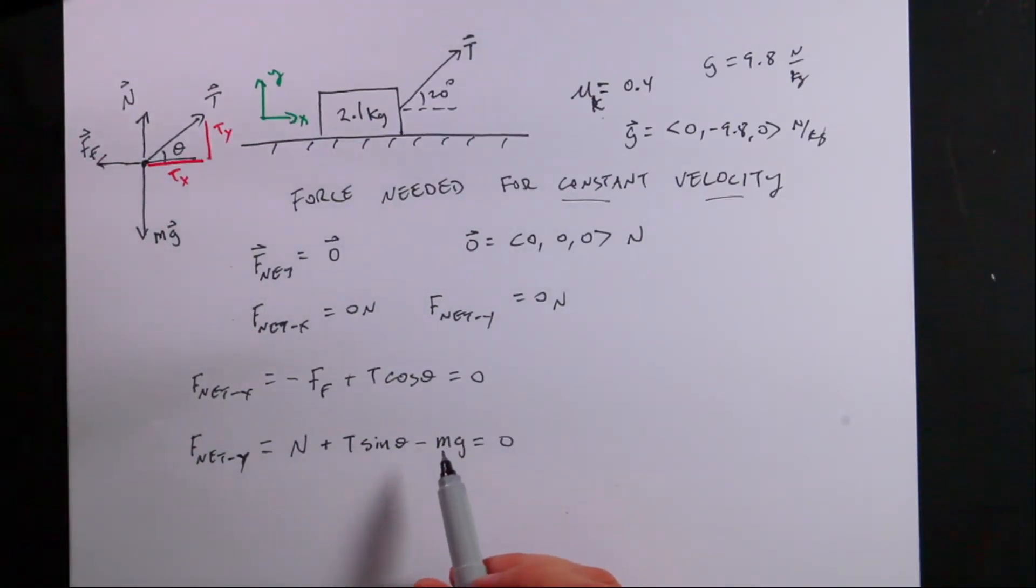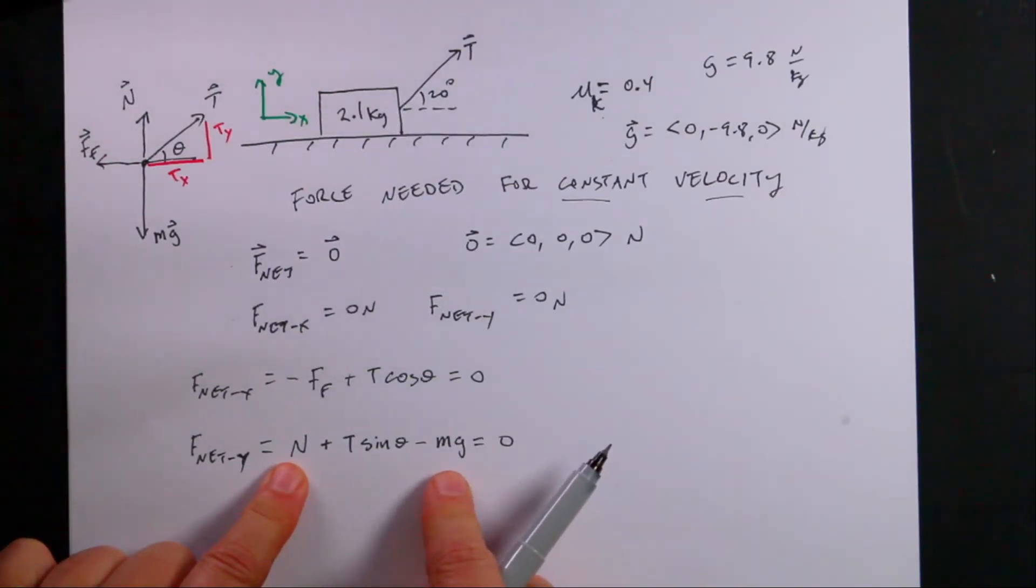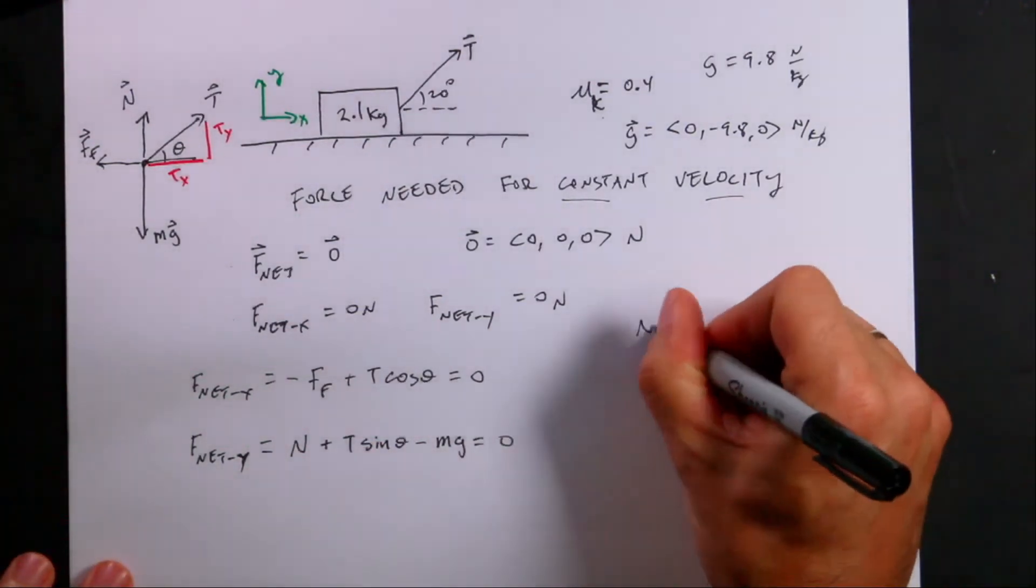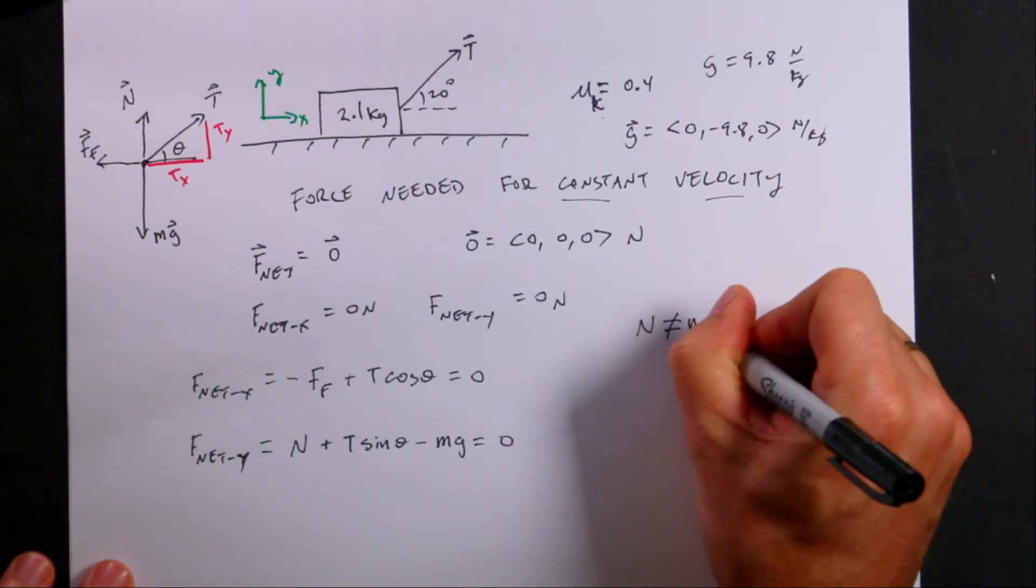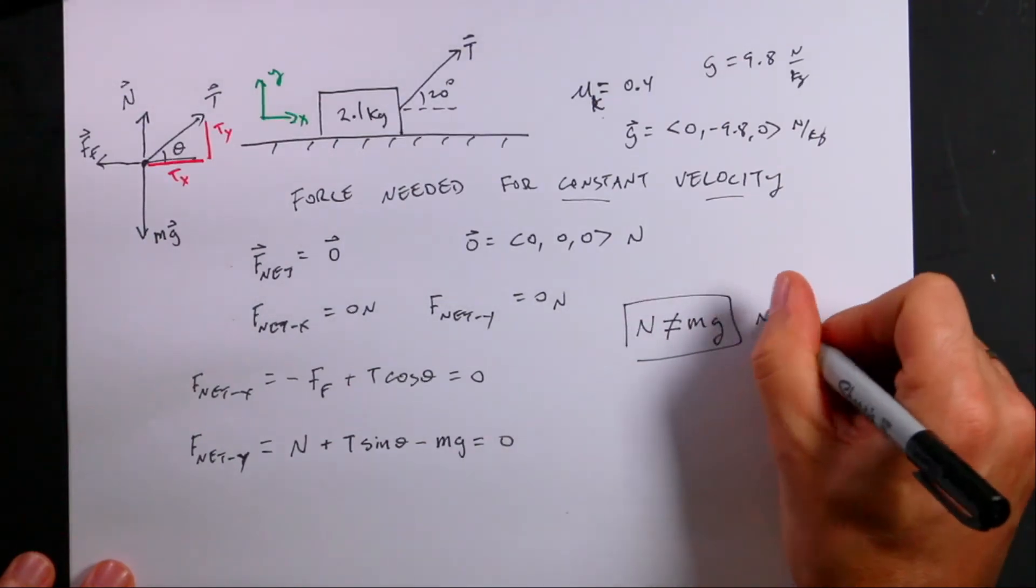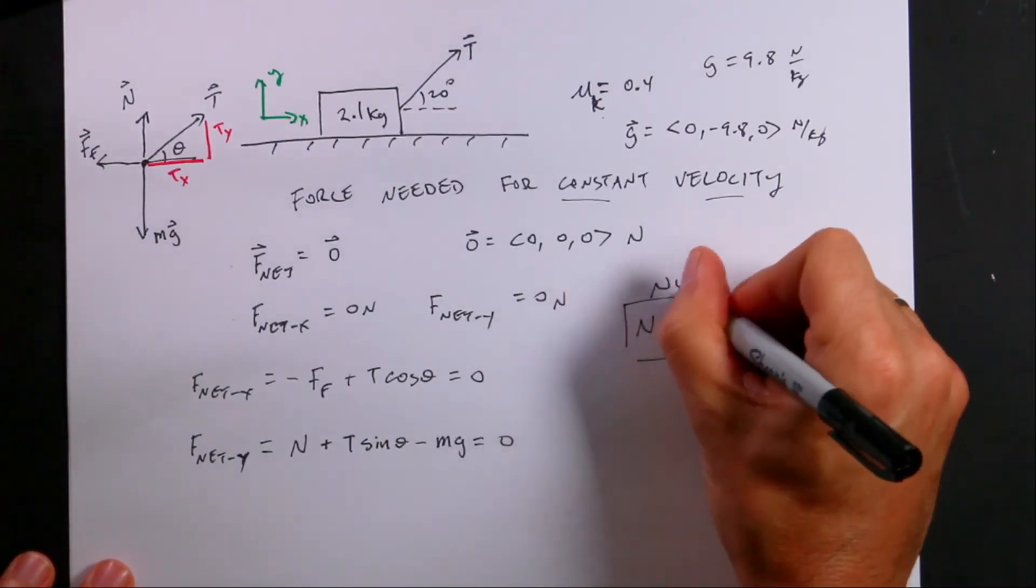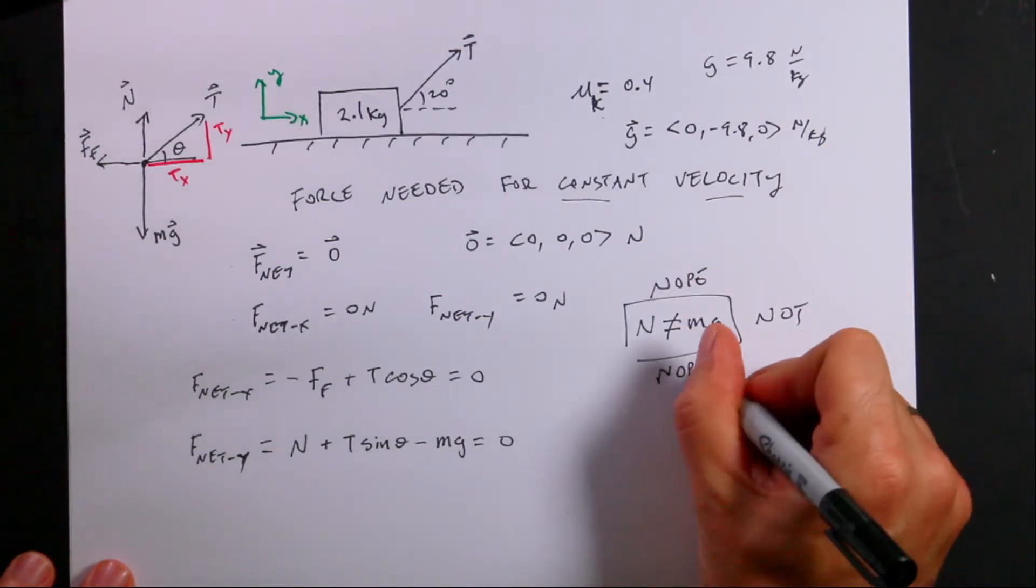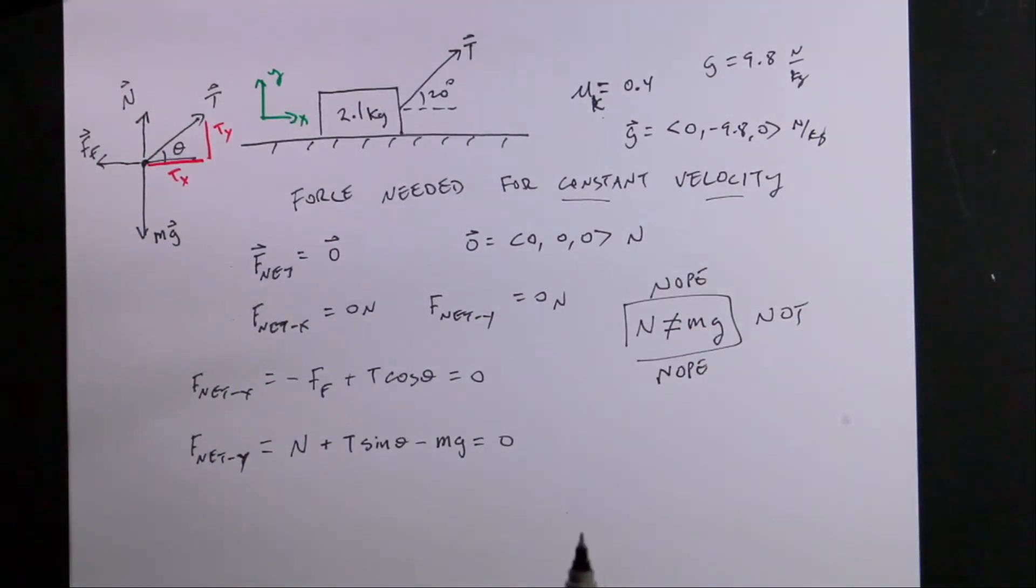Now, I'd like to point out something really important here. If n was equal to mg, then this whole thing would be zero. Right? So this n is not equal to mg. Not. Not. Nope. Nope. Just to be clear. So there's a lot of problems that you do where n turns out to be equal to mg. But there's a lot of problems that's not. Okay. So don't just say, oh, n is equal to mg. Done. I made that mistake when I was a student. I remember making that mistake. Okay. So that's not true.